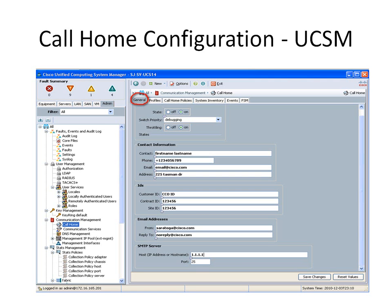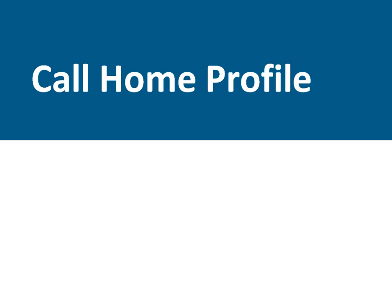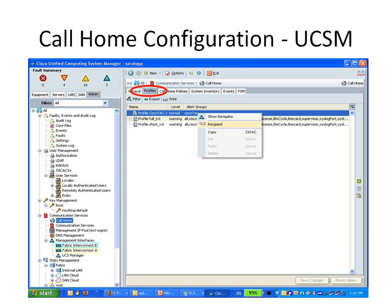Once you configure your Call Home feature, the next step is to configure your Call Home profile. A Call Home profile is used to determine which alert group and recipients receive the email alerts for events that occur at a specific severity. By default, you must configure the Cisco TAC-1 profile. You can also create additional profiles to send email alerts. Click on your Profiles tab, which is right next to the General tab, and select your Cisco TAC-1 profile.